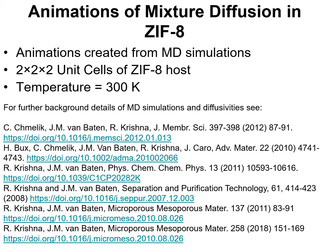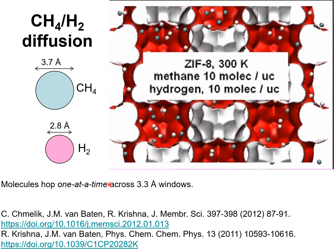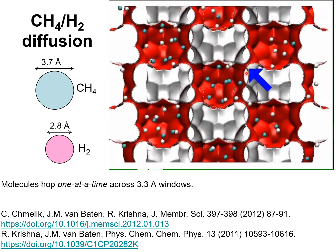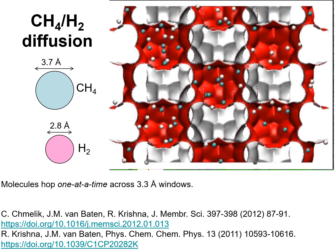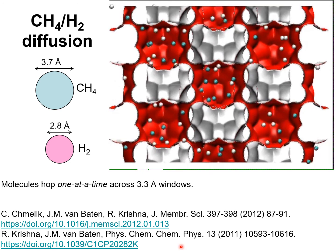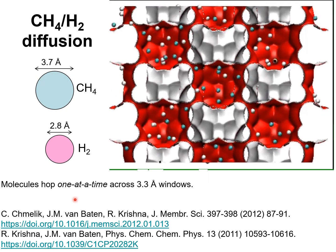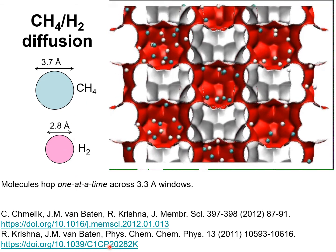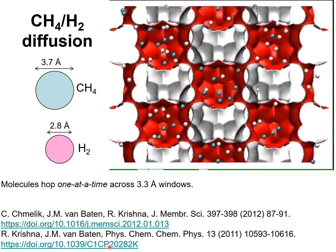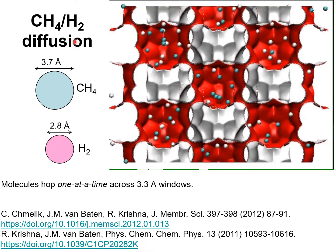Let's first look at the separation of hydrogen and methane molecules. Hydrogen, being a smaller molecule, can hop from one cage to the next much more easily than methane. The effective diameter of the methane molecule is significantly larger than that of hydrogen. So a ZIF-8 membrane is selective to hydrogen, and the hydrogen-methane permeation selectivity is significantly large and can be used in industrial practice.